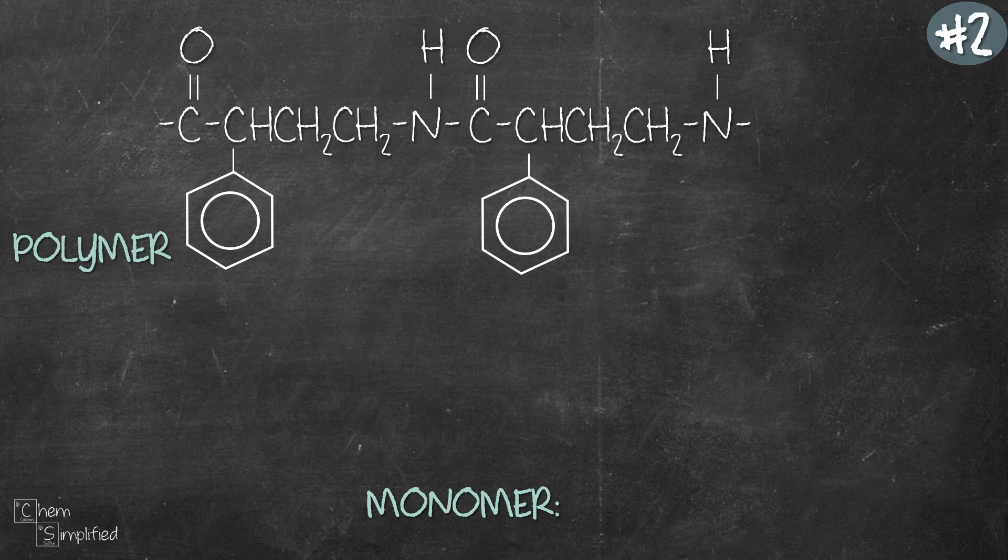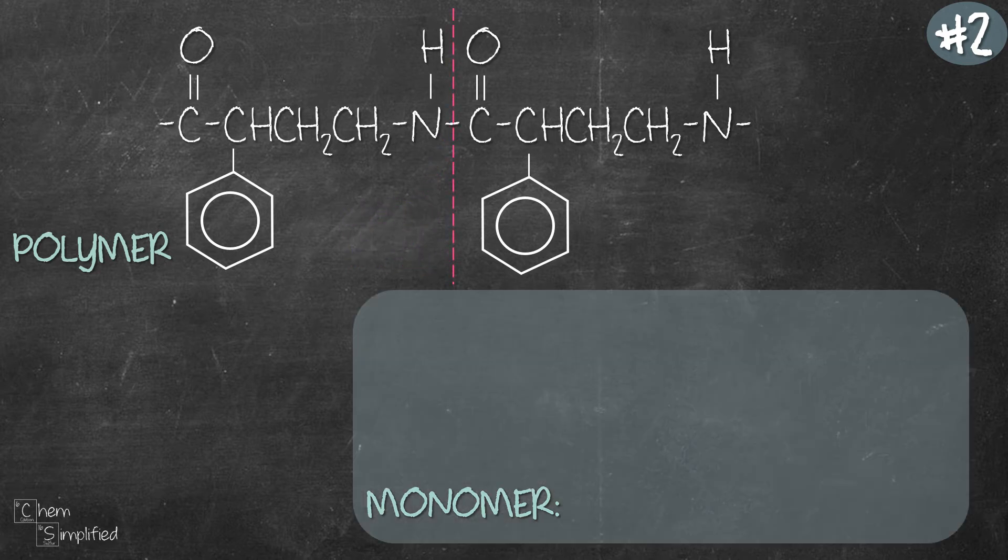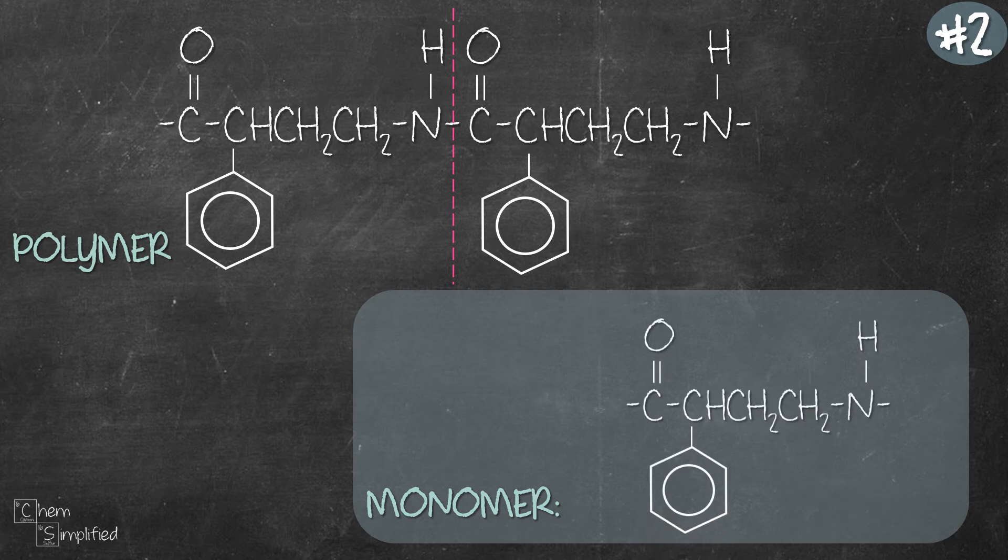Let's try with another example. Now there's no ester linkage here, but instead I see an amide linkage. Notice that the two parts are identical. So we'll just copy down one of it and the same thing. Add OH to C double bond O and H to nitrogen. There we go. We just found the structure of the monomer that made up this polyamide.